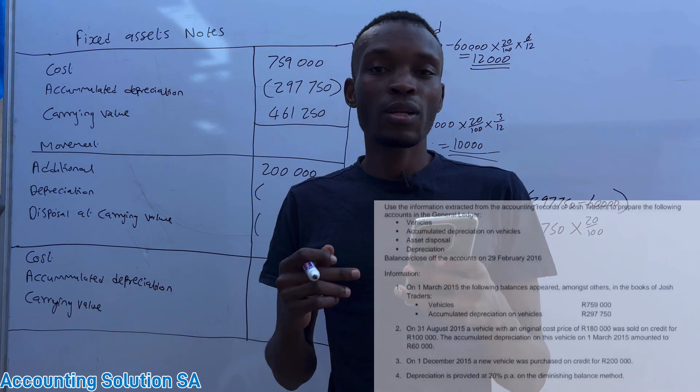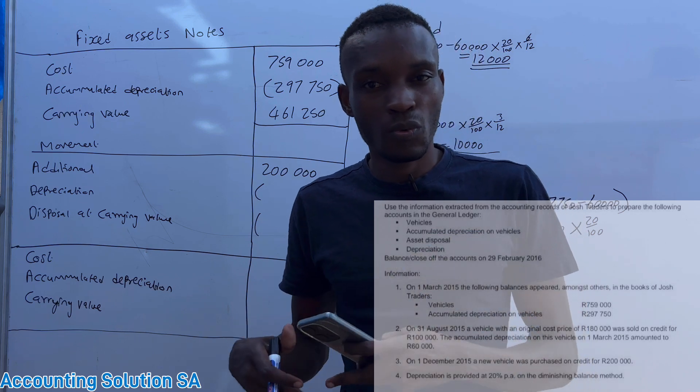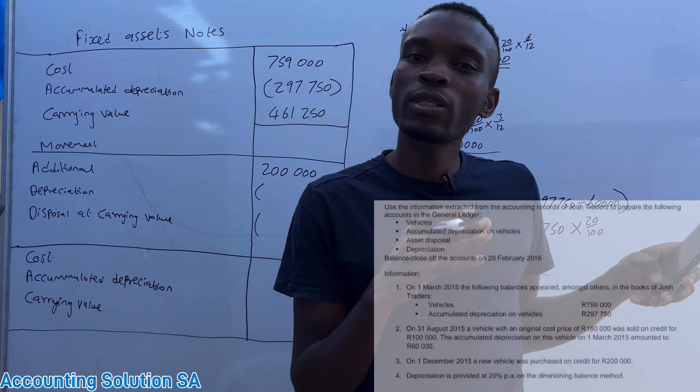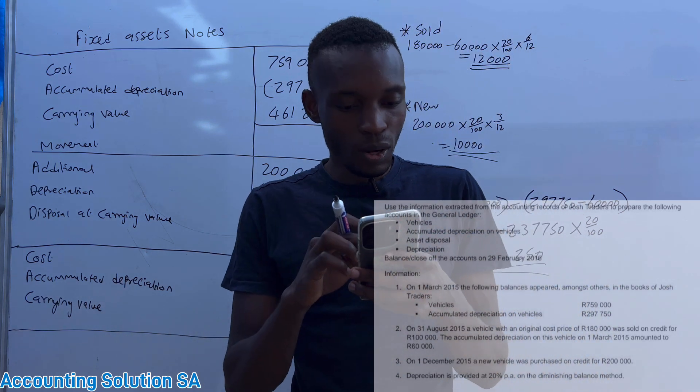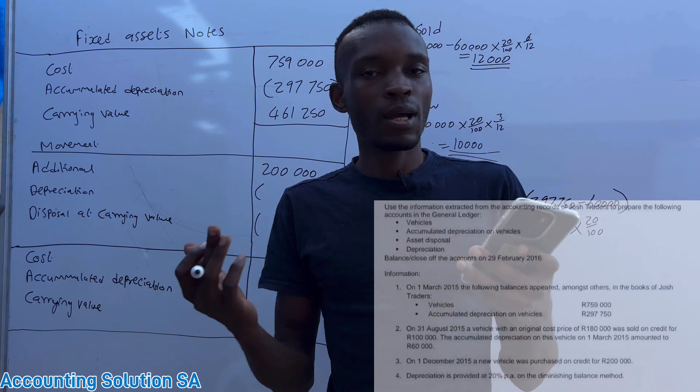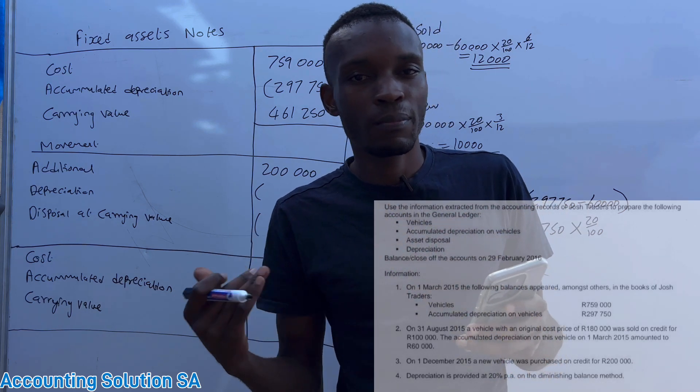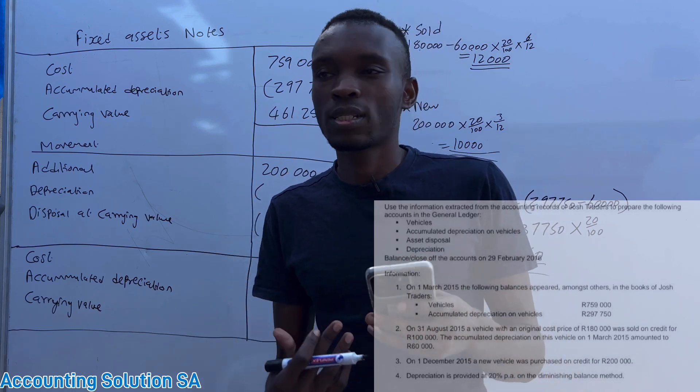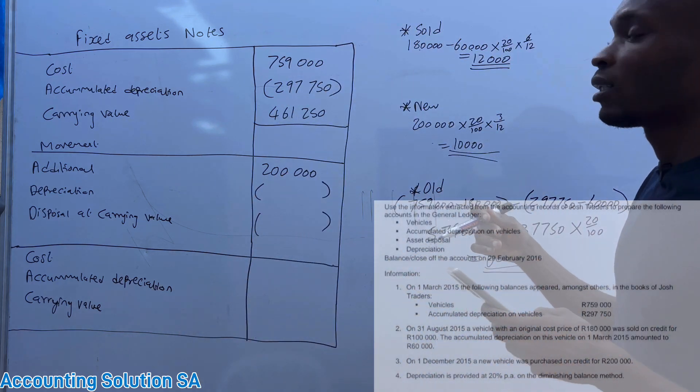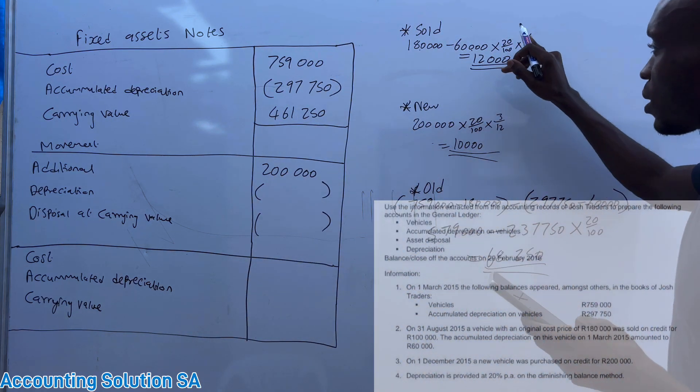Why we needed to calculate a depreciation from 1 March 2015 until 31 August? Because accumulated depreciation of 60,000 that they give us, it's not for 31 August, the day that we sold. We need to push it until that day of 31 August because they only calculated up to March, which means that we have to proceed and say March, April, May, June, July, August - another six months we need to calculate these six months as well.